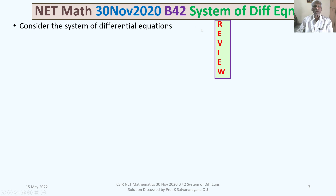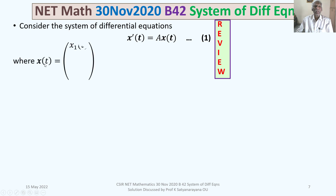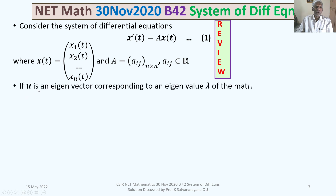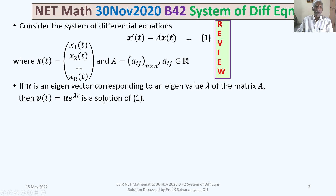Consider the system of differential equations x'(t) = A·x(t), where x(t) is an n-column vector [x1(t), x2(t), ..., xn(t)] and A is an n×n matrix whose (i,j)-th entry a_ij is a real number. If u is an eigenvector corresponding to an eigenvalue λ of matrix A, then v(t) = u·e^(λt) is a solution of this system of differential equations.